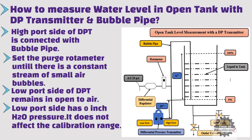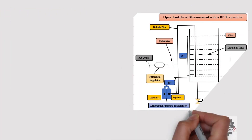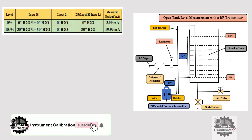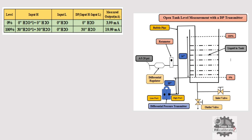Now let's go to the calculation table in order to calculate the range for the DP transmitter. As you can see from the table, at 0% level, the transmitter high side has 0 inch H2O pressure. Due to the dry leg, transmitter position does not affect calibration range. Similarly, the transmitter low side is open to air, so it has 0 inch H2O pressure. Differential pressure is the difference of input high side pressure and input low side pressure, so at 0% level, differential pressure is 0 inch H2O.